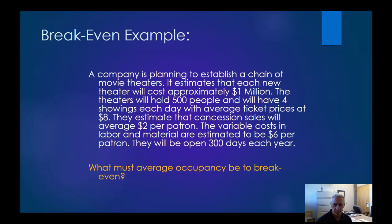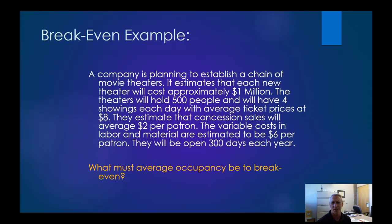Here's a break-even example using a movie theater. Assume each new theater costs approximately $1 million — a low ballpark for Arizona. The theater holds 500 people with four showings per day — probably low for here — and an average ticket price of $8. Concession sales are estimated at $2 per patron, and variable costs for labor and materials are estimated at $6 per patron, all-in.